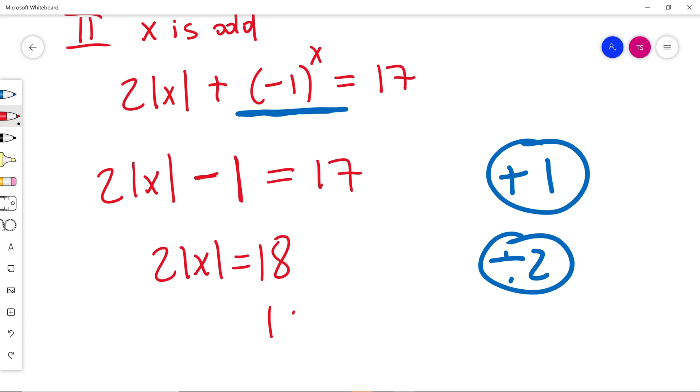So absolute value of x is equal to 9. So x is equal to 9, or x is equal to negative 9.